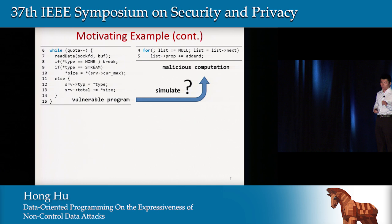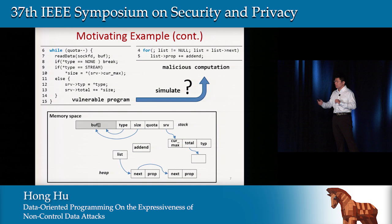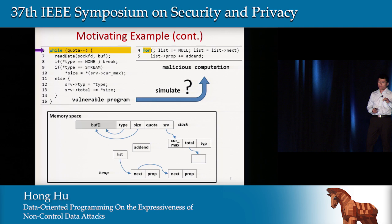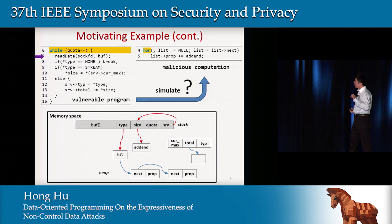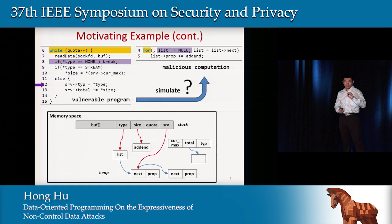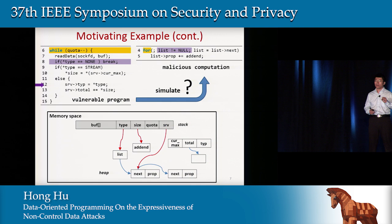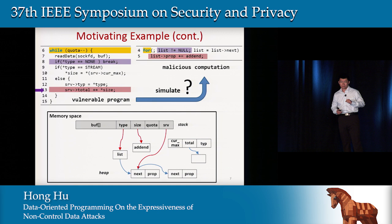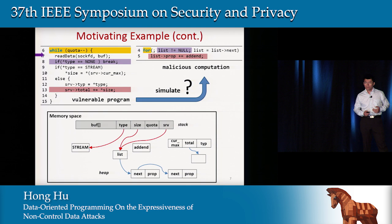We can draw the memory space including the stack and heap — this is a legitimate memory layout. If we execute this vulnerable code, the while loop can be used to simulate the for loop. We can use the memory error to corrupt the stack in a particular way. The tab pointer pointing to the list variable simulates the loop condition. We can make the program go to the else branch, corrupting the SRV pointer to the first object of the linked list, and the addition here simulates the addition operation in the expected malicious computation. In the next round, we corrupt the stack differently, go to the if branch, and the memory loading behavior simulates the expected loading behavior in the for loop.